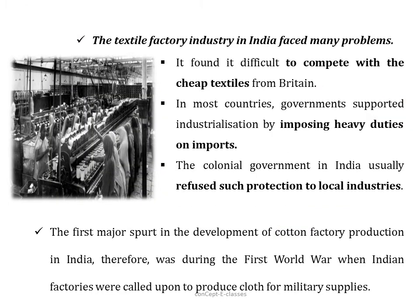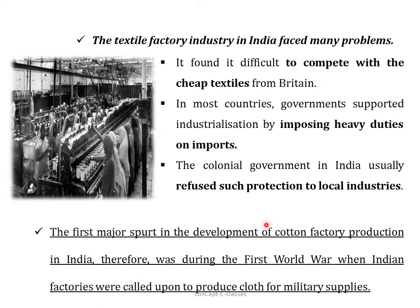However, the textile factory industry in India faced many problems. First, it found it difficult to compete with cheap textiles produced from Britain. Second, in most countries the government supported industrialization by imposing heavy duties on imports, but the colonial government in India refused to give protection to local industries. However, the first major spurt in development of the cotton factory industry in India was during the First World War, when Indian factories were called upon to produce cloth for military supplies.